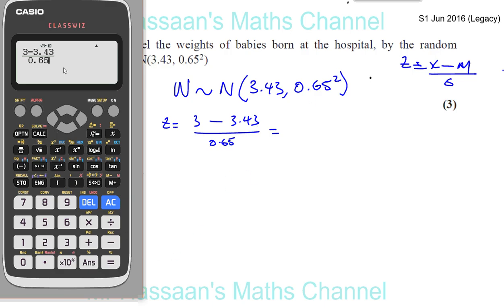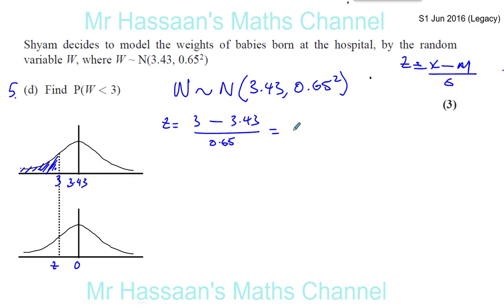Be very careful with your calculator — you divide by the standard deviation, not the variance, so it's not 0.65 squared. Also, many people enter 3 minus 3.43 divided by 0.65 without a fraction bar, which causes the calculator to divide before subtracting. Use brackets around '3 minus 3.43' or use the fraction bar. This gives Z equals minus 0.6615.